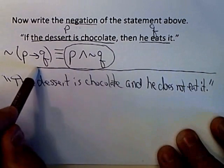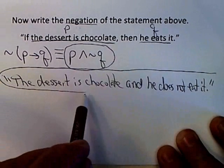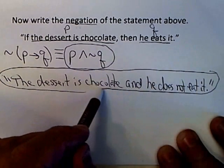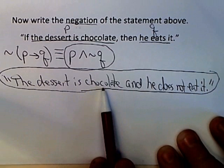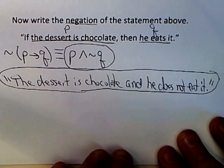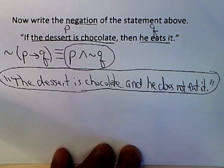So this statement, the dessert is chocolate and he does not eat it, is the negation of the original statement. And notice it also does not have an if-then.